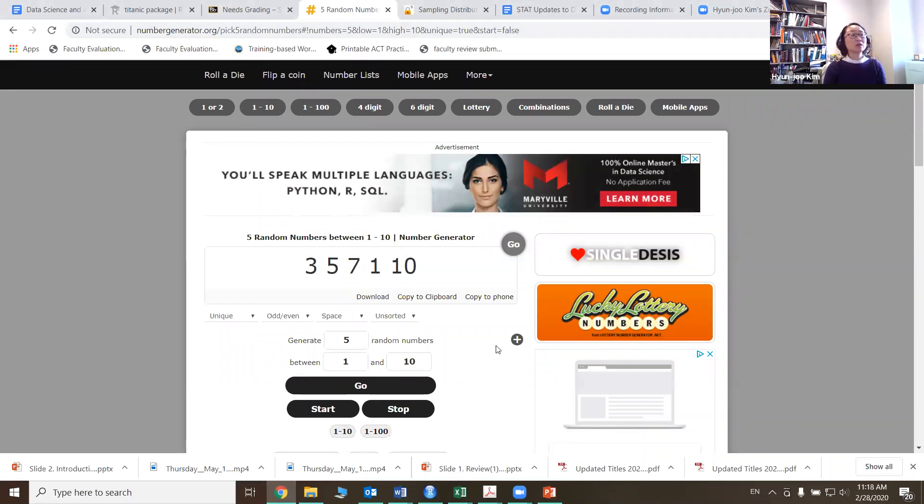Okay, so the default for this setting is actually exactly what we're trying to do, generate five random numbers between 1 and 10. So if you click the Go button, it will generate five numbers from 1 to 10. If you push the Go button one more time, it will do it again, and so on. Okay, so that's how we're going to do the random sample.